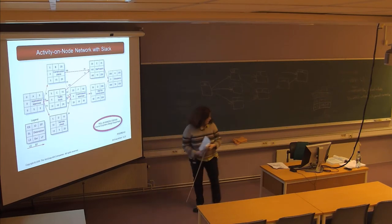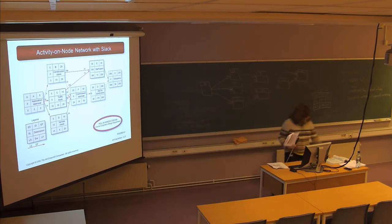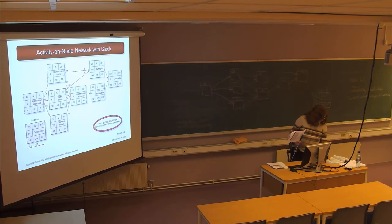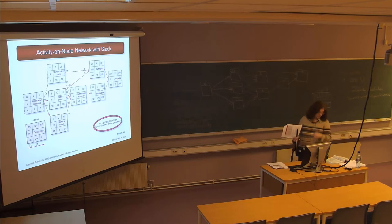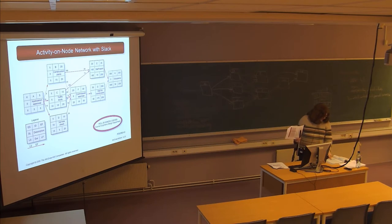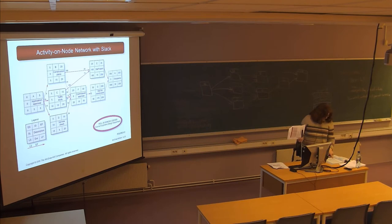Looking at the image on page 173, there's a series where the total slack was 15 on the top series. The free slack at the end of the row was 15, but the free slack on the preceding nodes was zero, because they're proceeding in the same chain of events.